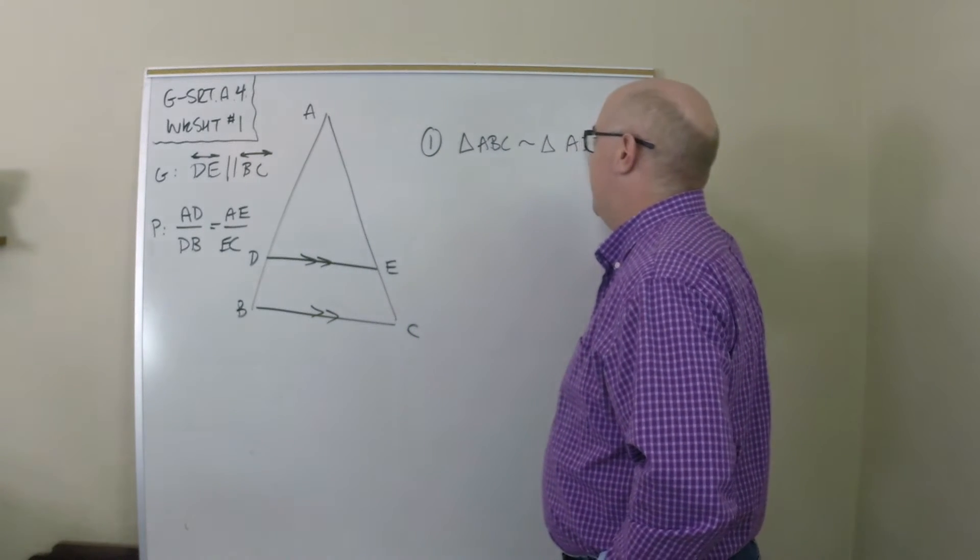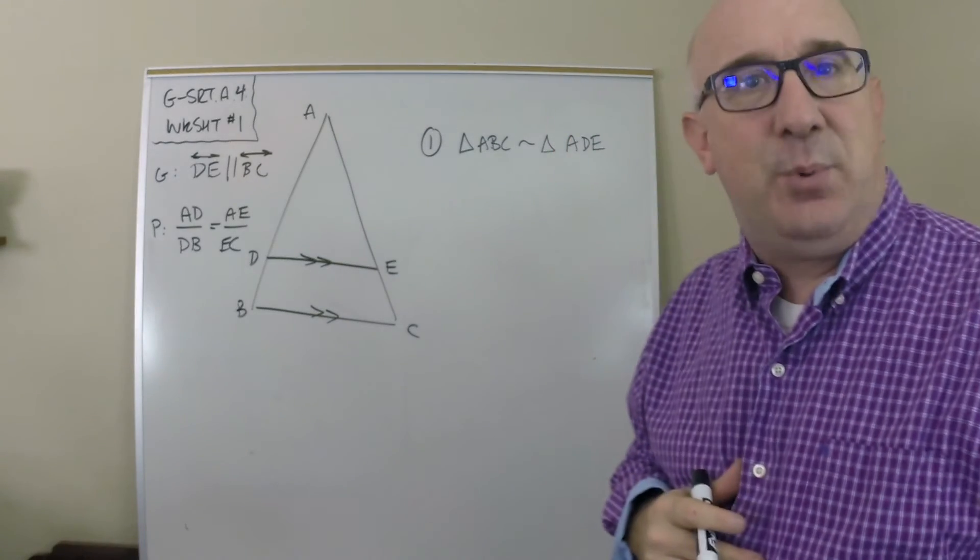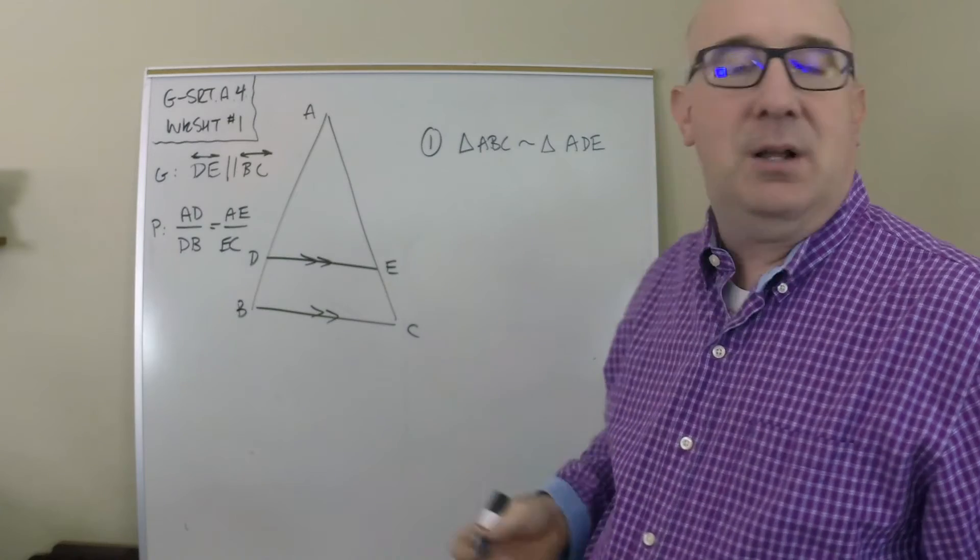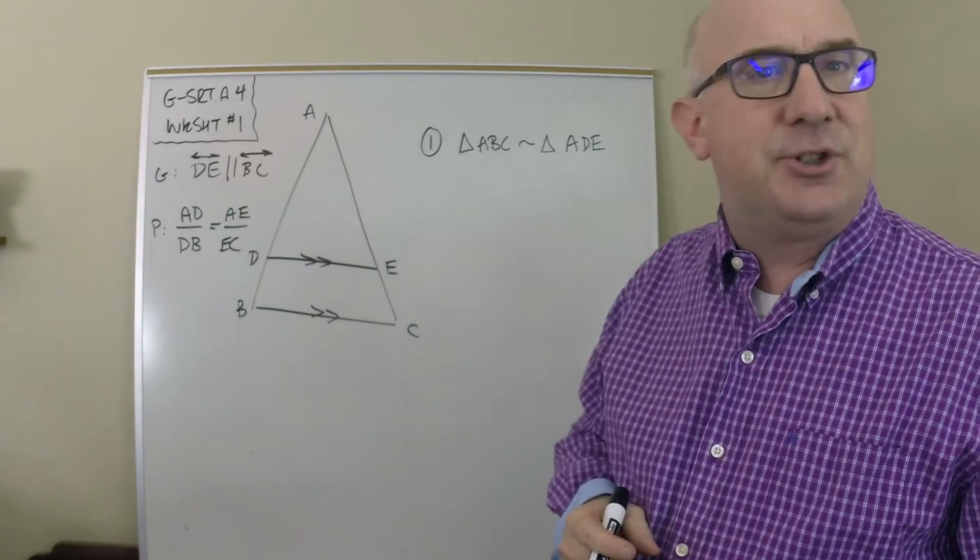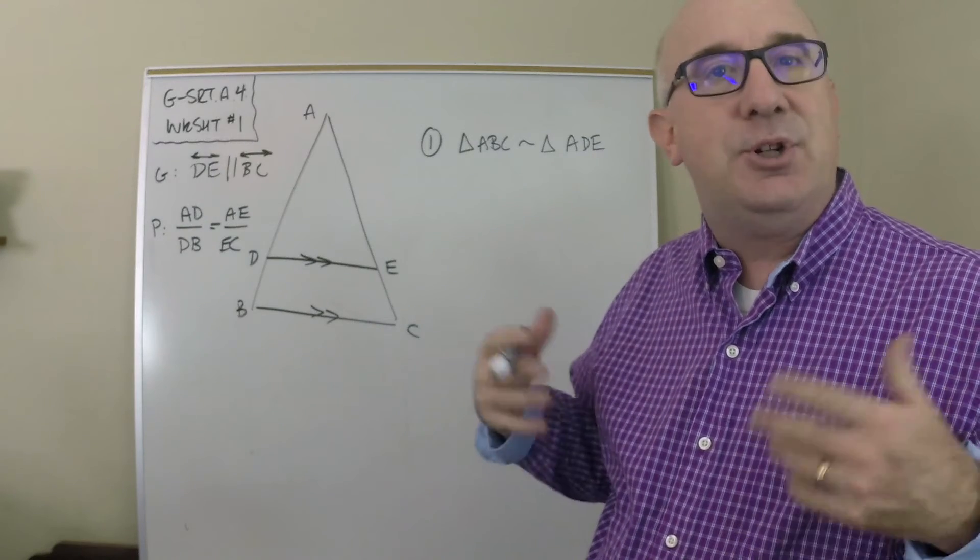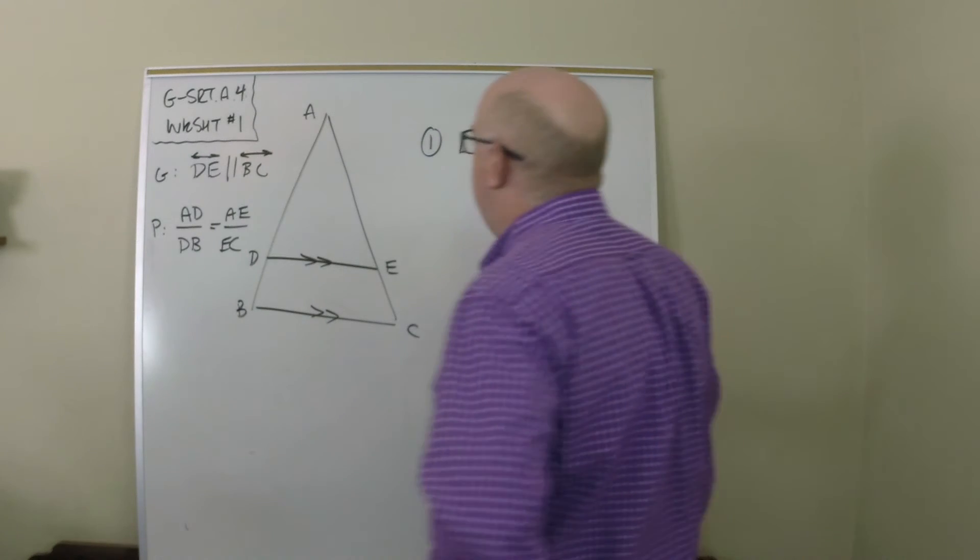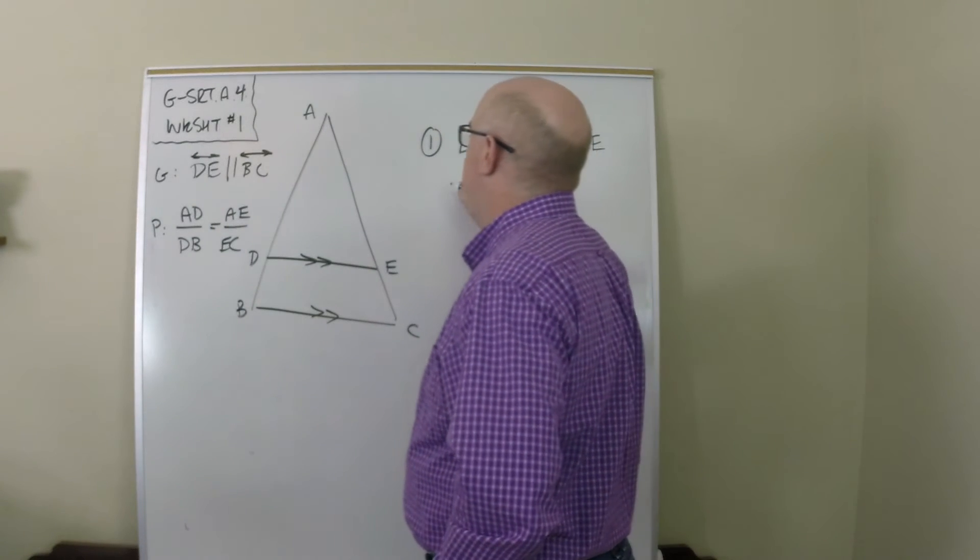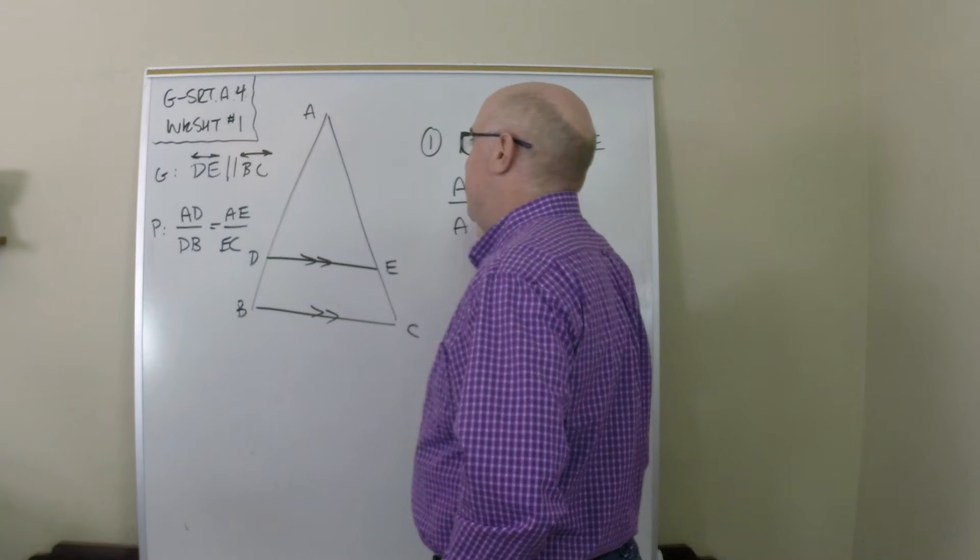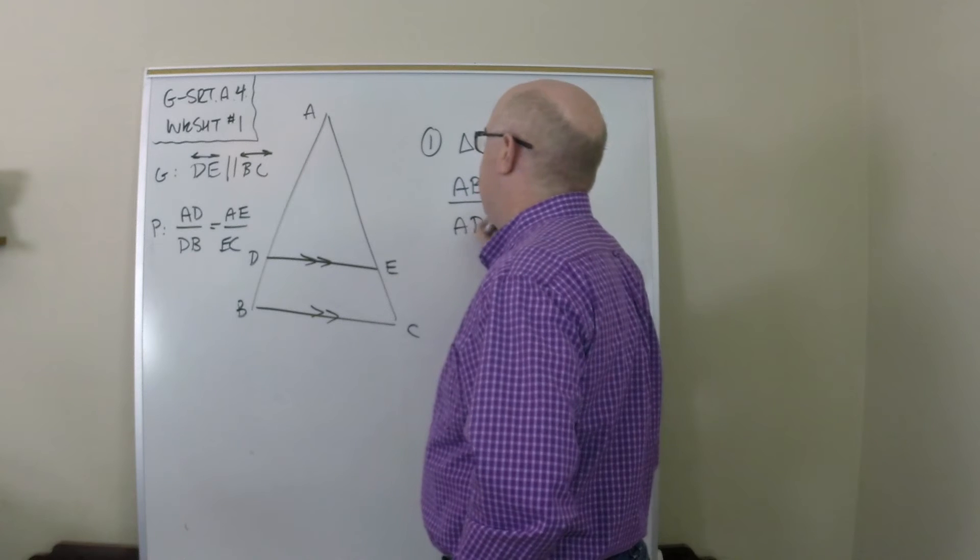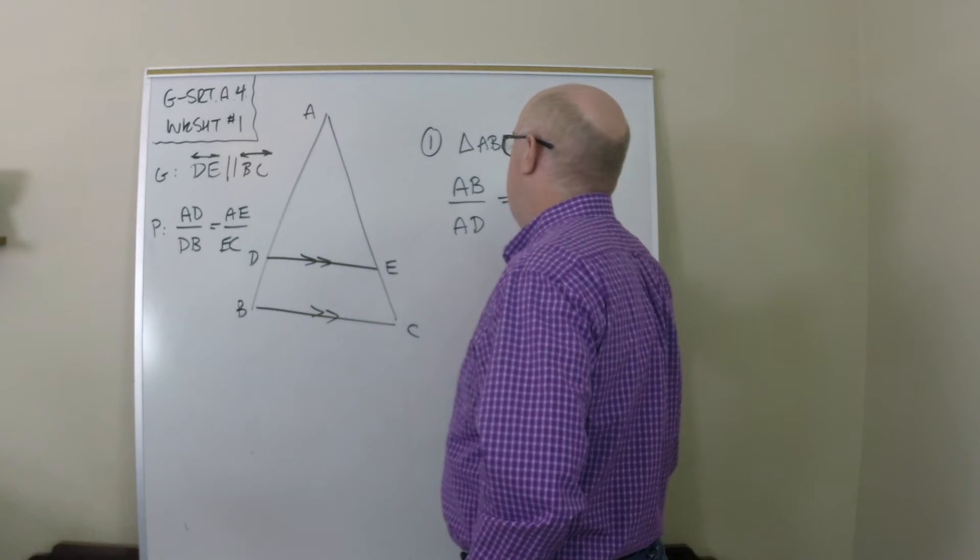My conjecture to you is that's quite a simple thing to do. Parallel lines give you corresponding angles, the angle A is common, you got lots of angles to establish AA as your reason. Now from this you do know that AB to AD is the same as AC to AE.